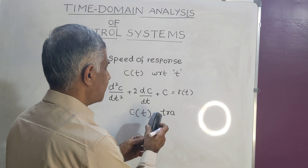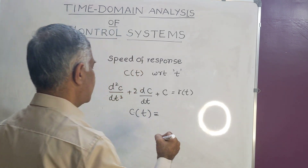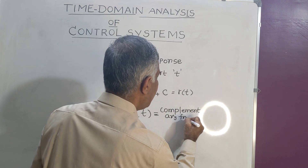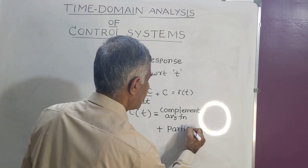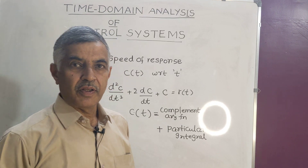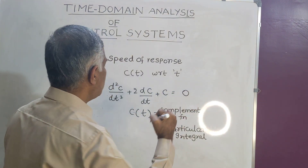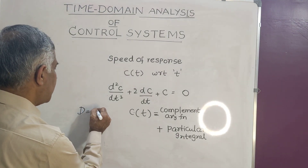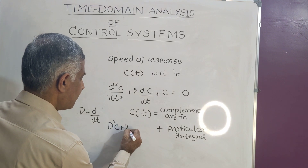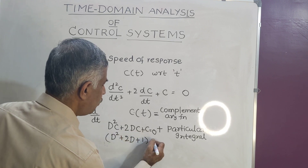I will call these the complementary function plus the particular integral. To find the complementary function, we do not consider input — r(t) is made equal to zero. Then using the operator d = d/dt, we get: d²c + 2dc + c = 0, or (d² + 2d + 1)·c = 0.